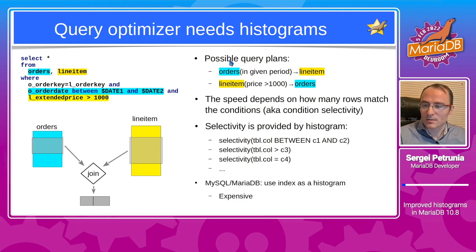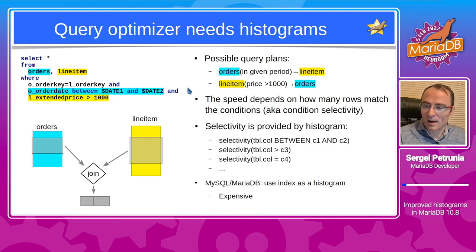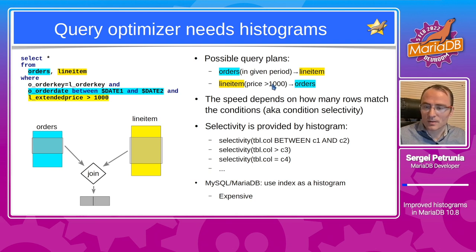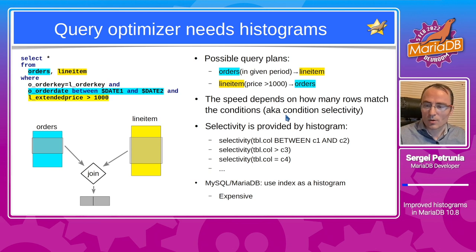Possible query plans are: if there were only a few orders placed in the given date range, we could start from orders, find them in the given period, and then fetch their items and check the prices. Alternatively, if there are only a few expensive items ever bought, we could start with items, find the expensive ones, and then check the date of the order. The speed of these query plans depends on how many rows match the conditions, so the optimizer needs to know condition selectivity.